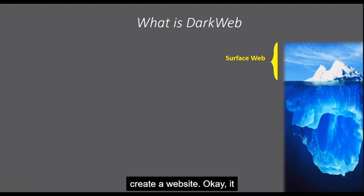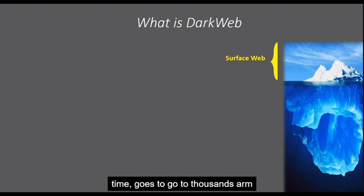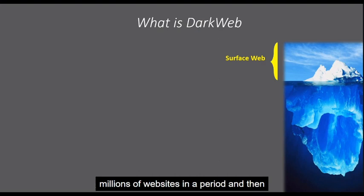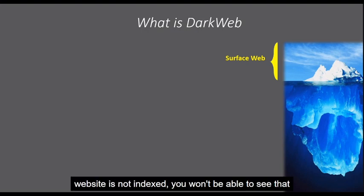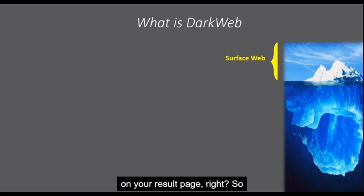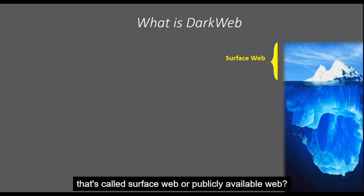Whenever somebody creates a website, it makes sure that the website should be crawled by Google. So Google, over a period of time, goes to millions and millions of websites, crawls those websites and their individual pages, and brings the results to you in your search results. So if any website is not indexed, you won't be able to see it on your result page. What you see in the results comes through indexing, and that's called the surface web or publicly available web.